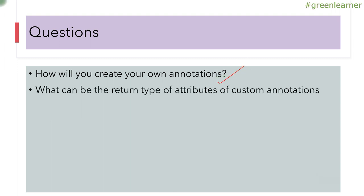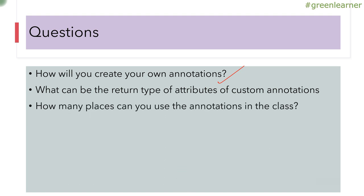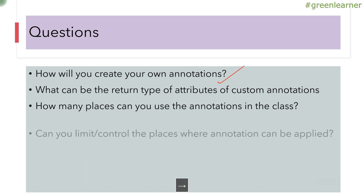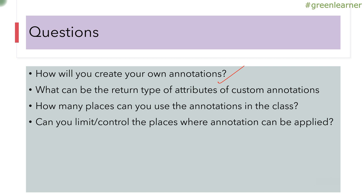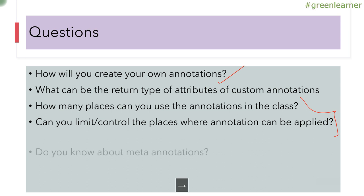How will you create your own annotations? Next, what can be the return type attributes of custom annotations? And how many places can you use an annotation in a class — for example, on the class itself, fields, methods, method arguments, and parameters? Can you limit or control the places where annotations can be applied? These two questions share the same answer.